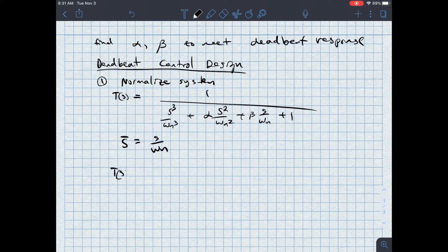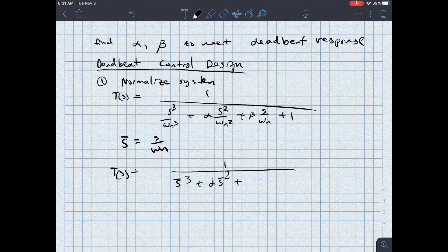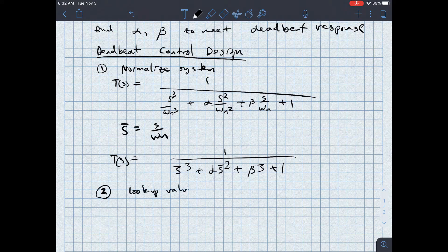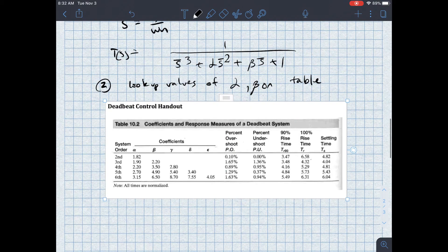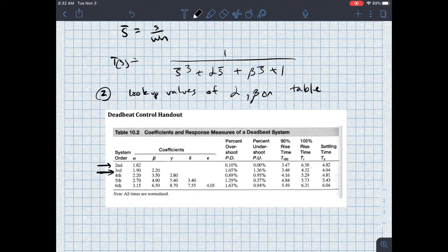So step number two is to look up values of alpha and beta on the table. And the table that we'll use is right here. For a second order system, I only have alpha, and I have a value of 1.82 for alpha. But for a third order system, I look at this third order line, and I have values for alpha and beta. And it tells me what the percent overshoot should be, percent undershoot, the rise time, as well as the settling time. And so these are actually the values without omega N involved.